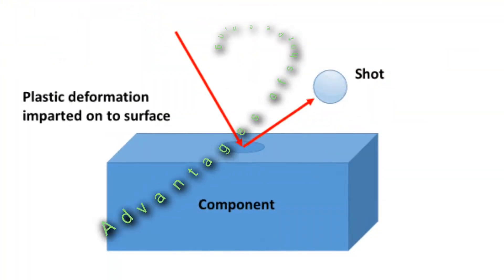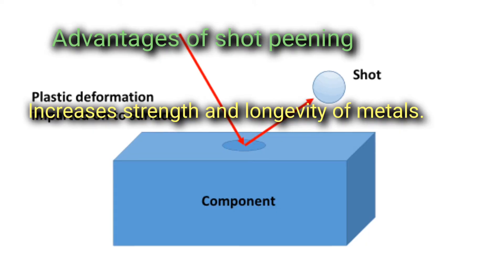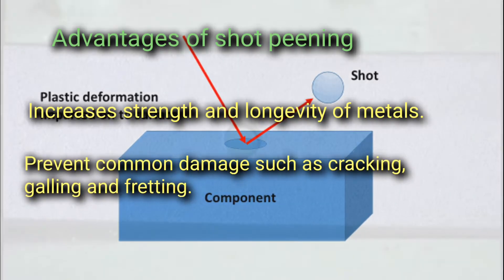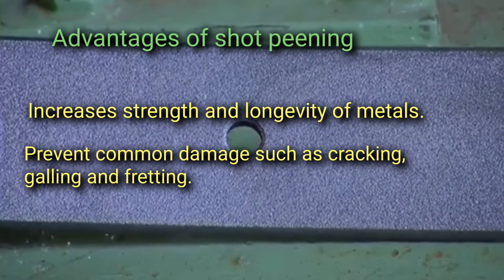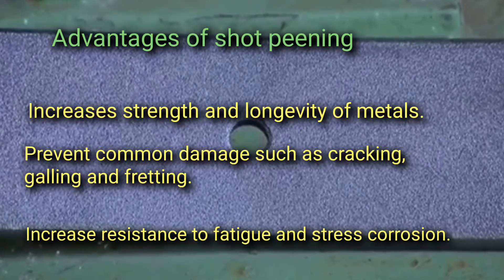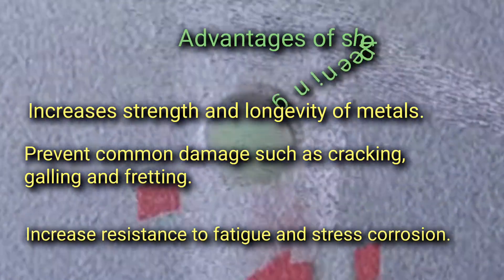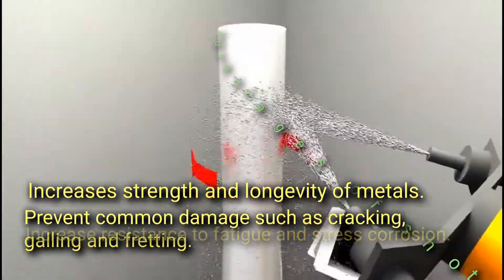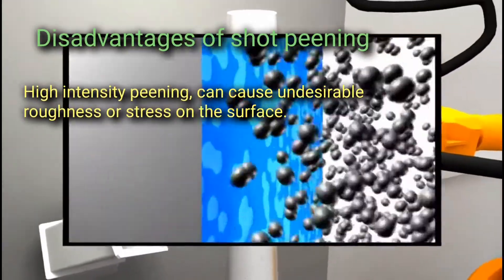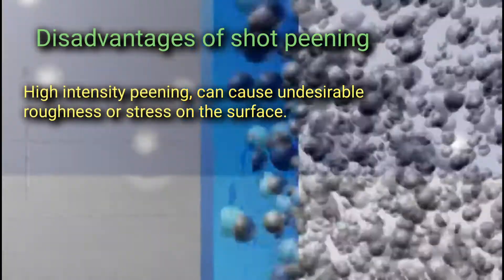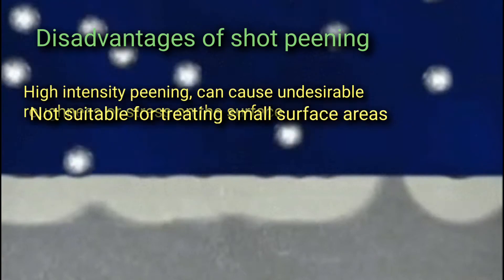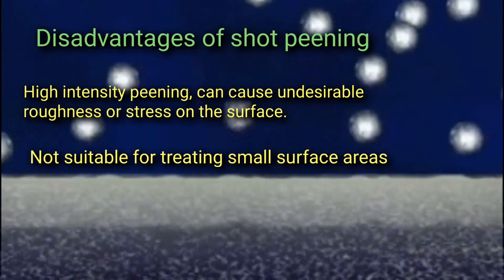Advantages of shot peening: increases strength and longevity of metals, prevents common damages such as cracking, galling, and fretting, increases resistance to fatigue and stress corrosion. Disadvantages of shot peening: high intensity peening can cause undesirable roughness or stress on the surface, not suitable for treating small surface areas, it can damage close tolerance parts.